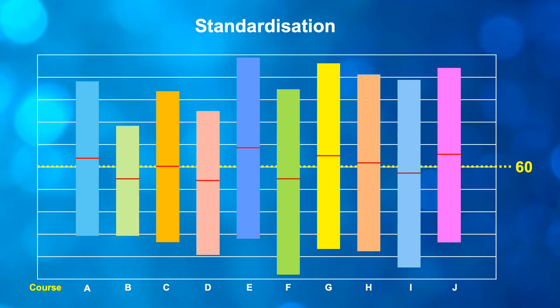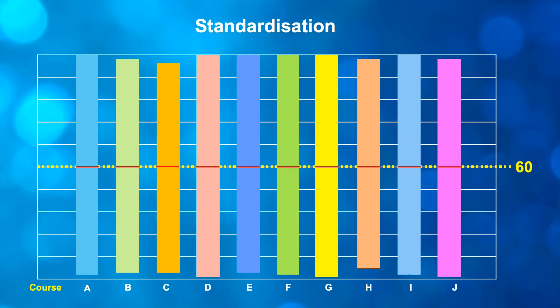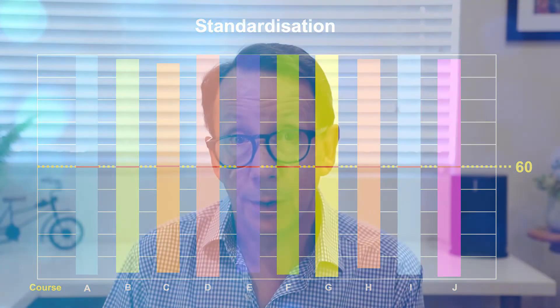What the standardisation process does is just even up the range of marks that come out of a particular exam, which then affects the course combined marks to make sure that they all sit around about the 60 mark and have a similar kind of spread — a range of marks as well. If you find that at the end of the year a particular exam that you do is really tough, and it's really tough for everyone in the state, then the standardisation process actually compensates for that.